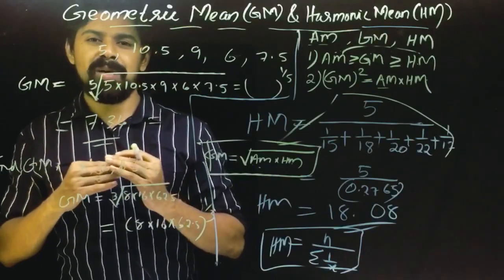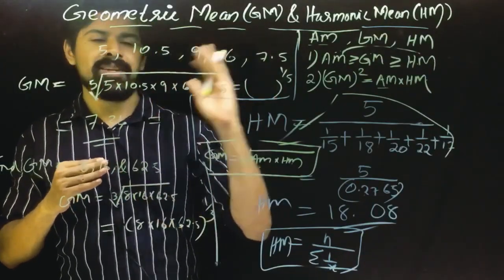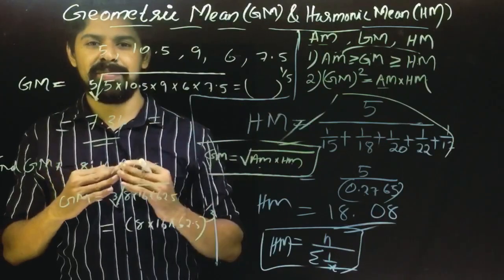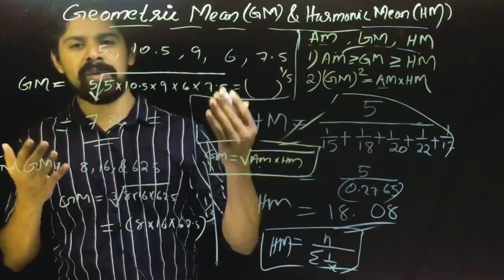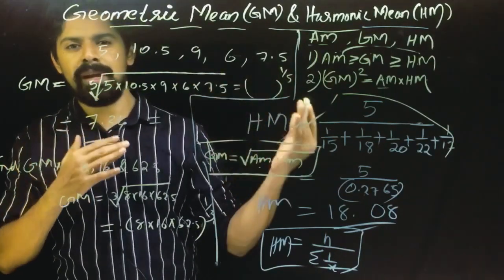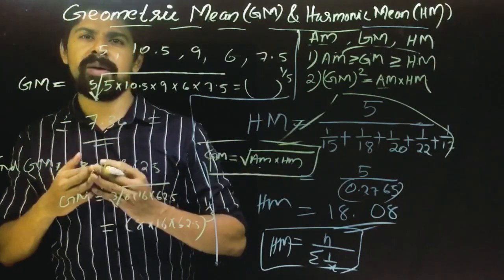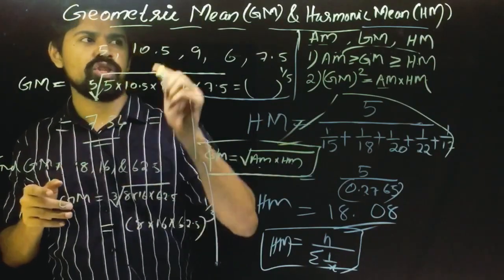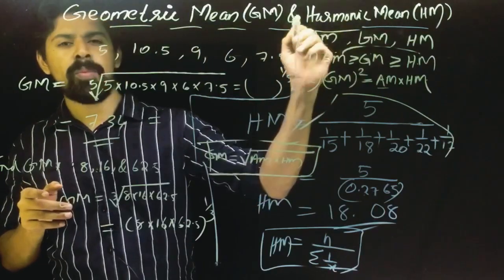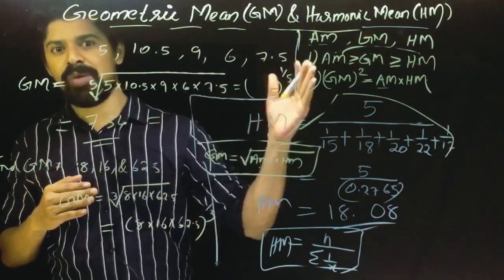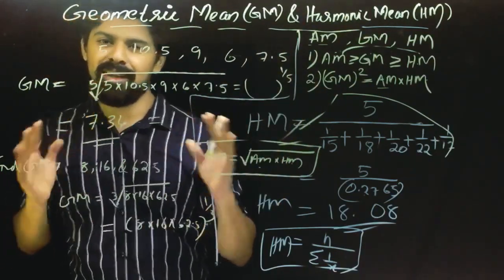In this video, we are going to start with GM and HM — that is, Geometric Mean and Harmonic Mean. We will cover arithmetic mean, median and mode as context, and then move on to geometric mean and harmonic mean.